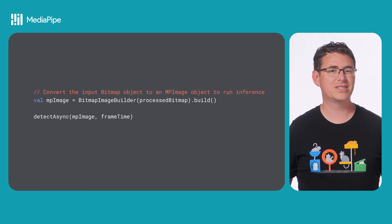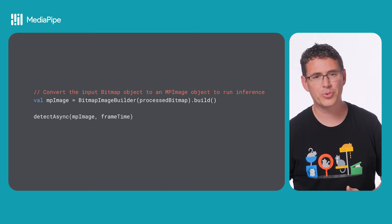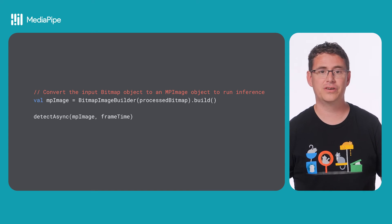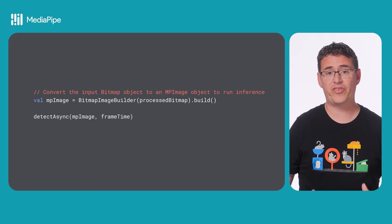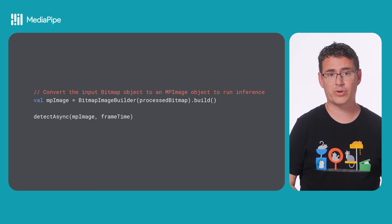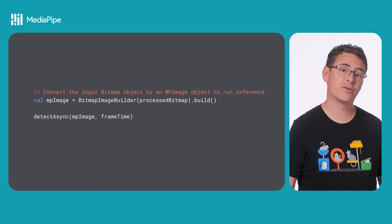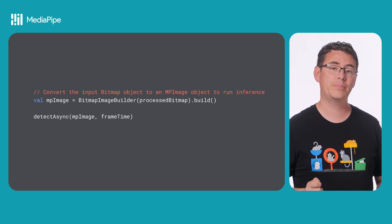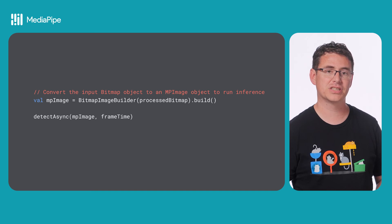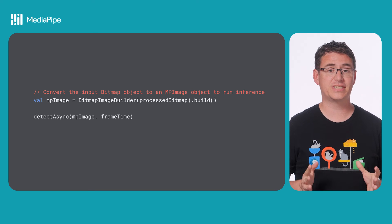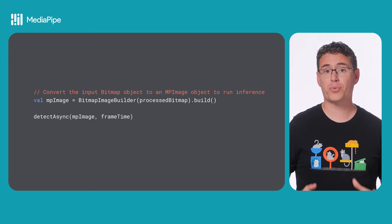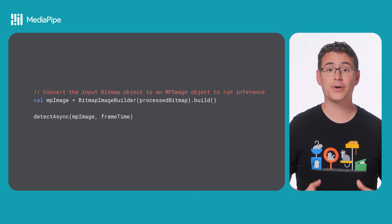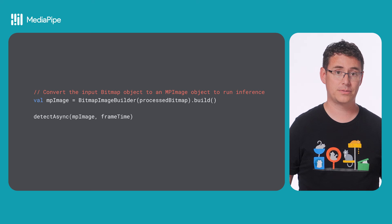For the last step, which is also very similar to face detection, after you've received an image to evaluate from the camera, you can convert it to a MediaPipe image object, then call detect async to start the process of mapping out the user's face.